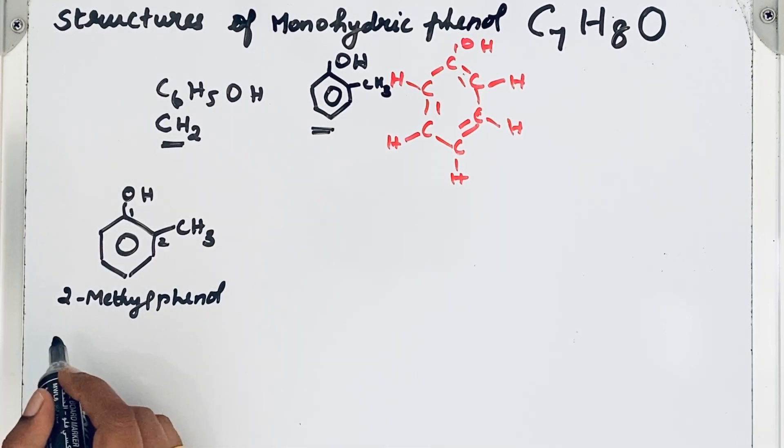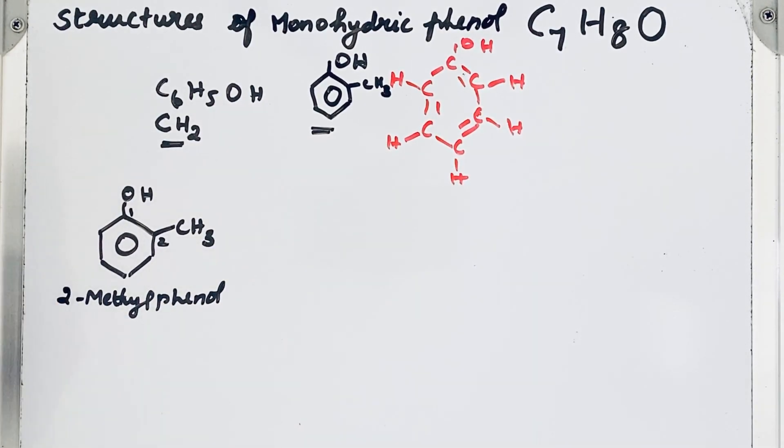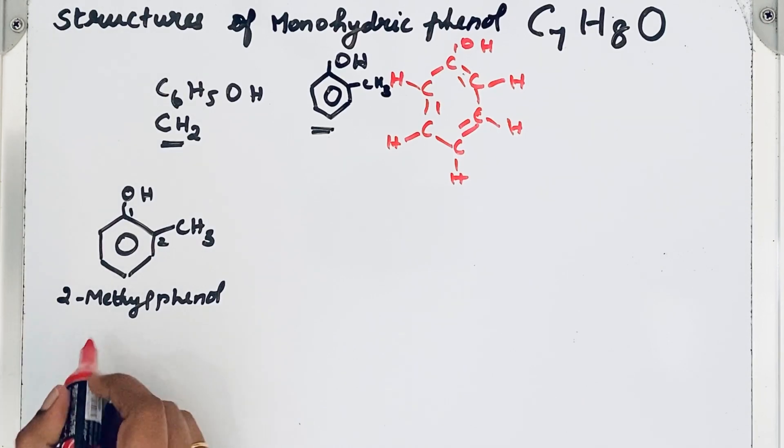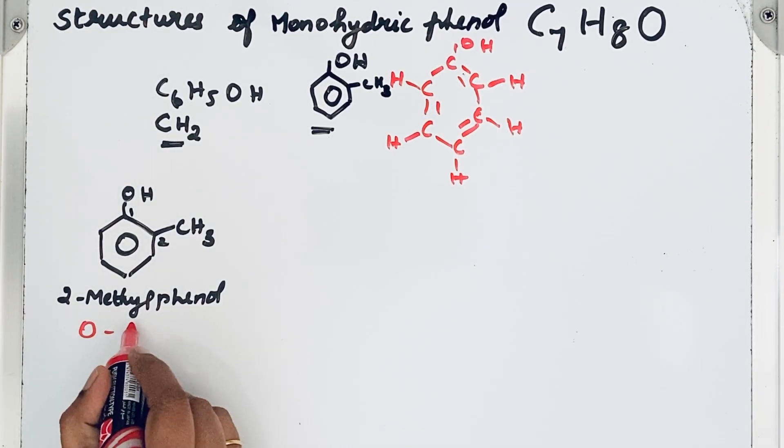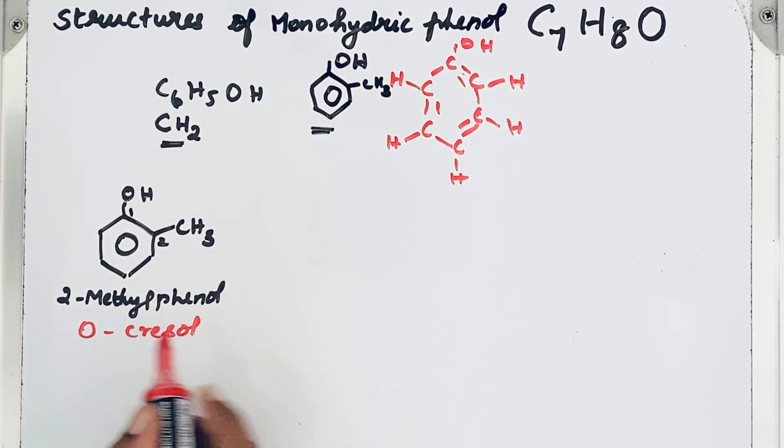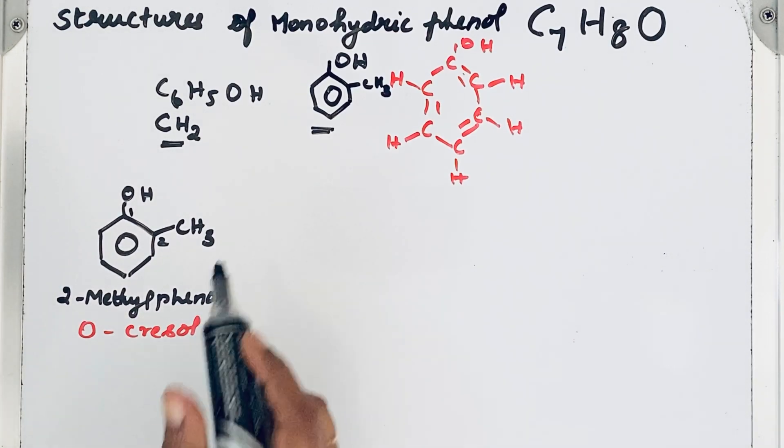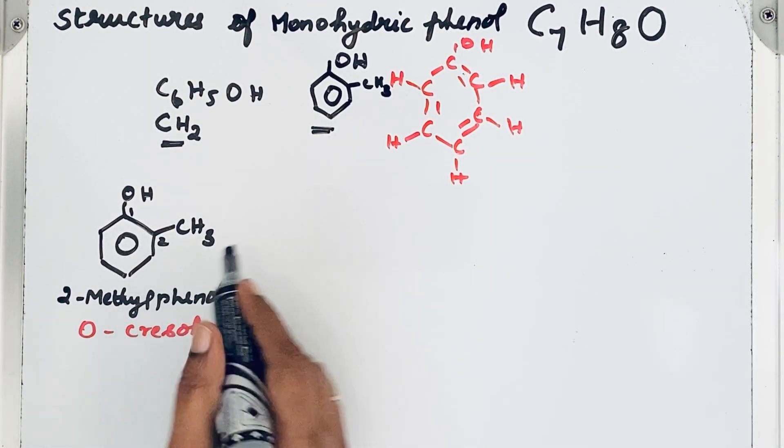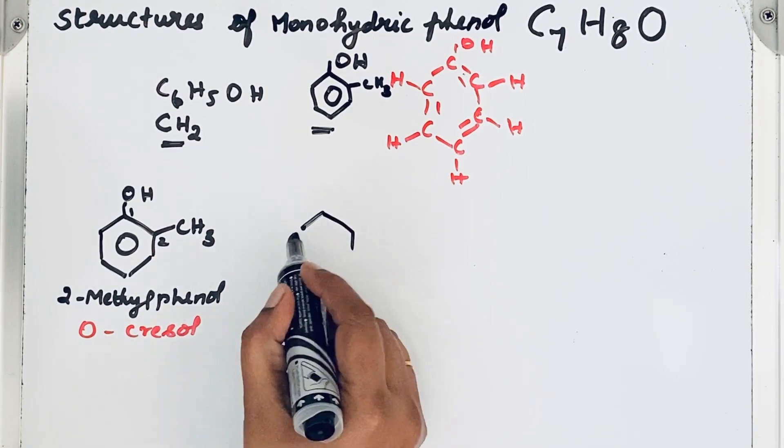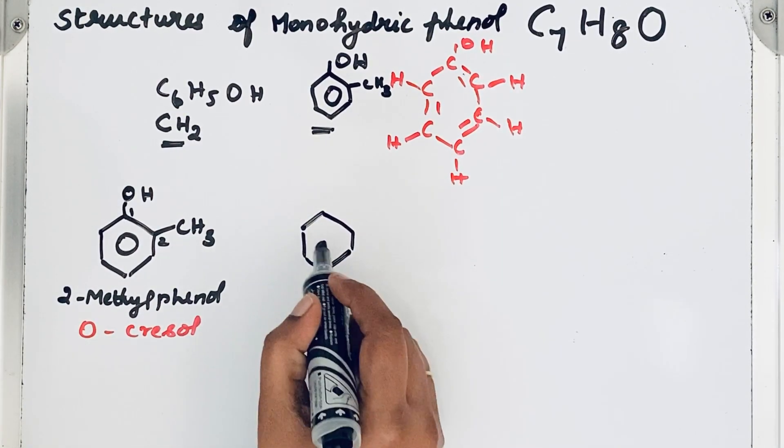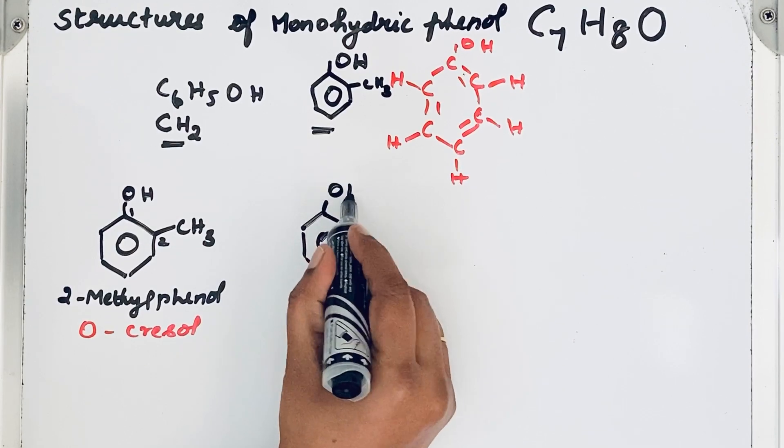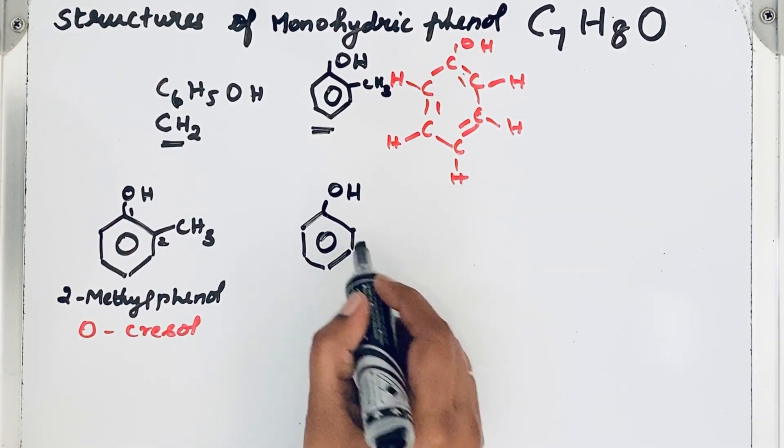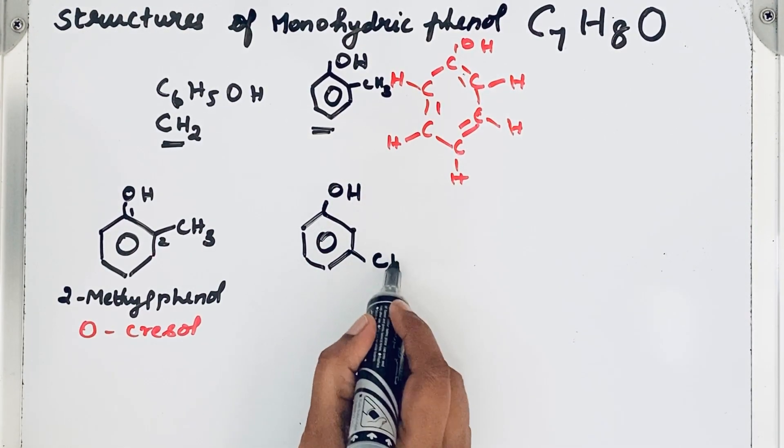Any guess for the common name? Common name is ortho-cresol. Now we will try to change the position of the methyl group. How you can change the position? Now in the previous structure, the methyl group is in the second position.